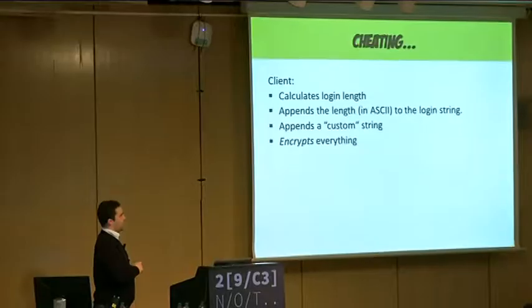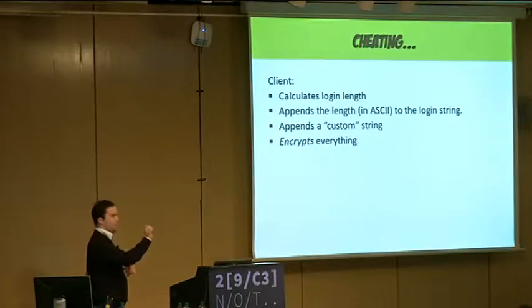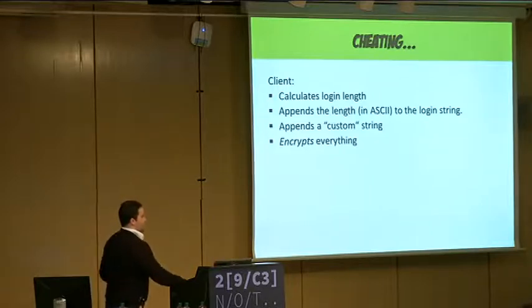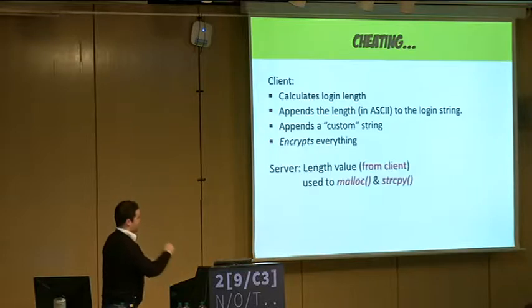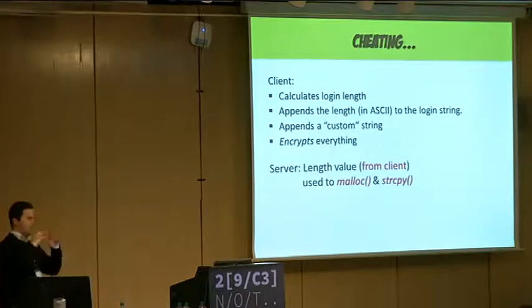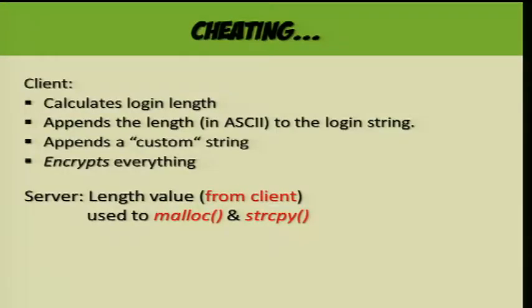The client is doing the following: I write whatever login name, it calculates how long that is, then it takes the login — for example 'Carlos' — and appends how long it is: 6 in ASCII. Then it appends another string, encrypts everything, and sends the scrambled bytes through the network. The server decrypts this and expects exactly this format. The server takes the length from the client and uses it for malloc to allocate some space in memory and then copy — and then you can already see the problem.